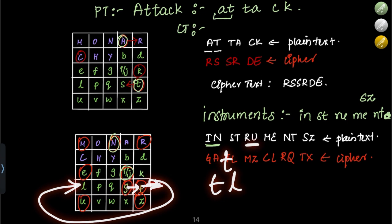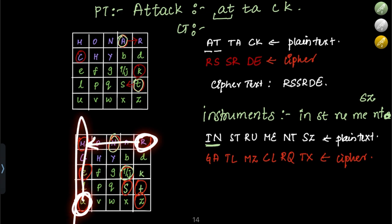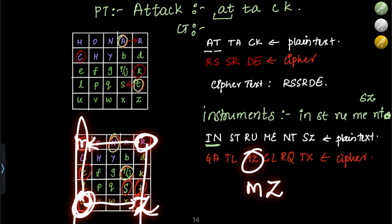For the pair R and U: R is here, U is here — different row and column, forming a rectangle. For R, take the letter in R's row at U's column, which is M. For U, take the letter in U's row at R's column, which is Z. So RU encrypts to MZ.